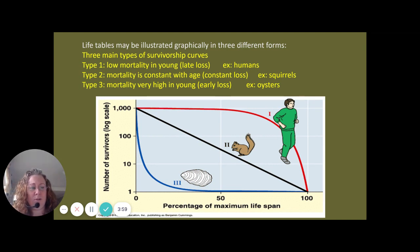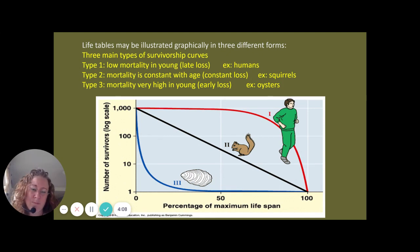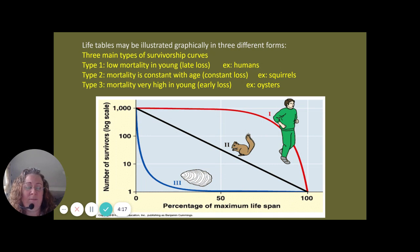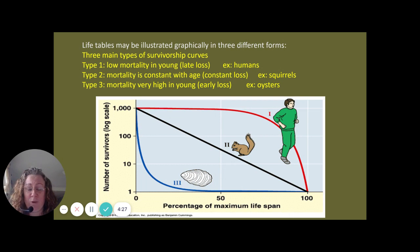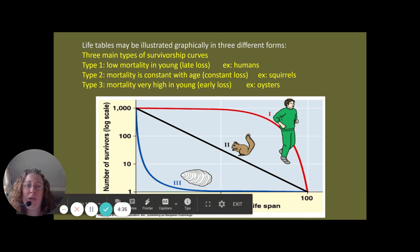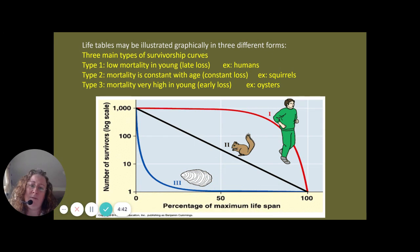The next is type 2 survivorship, where we get constant mortality — death is basically independent of age, depicted here with squirrels. The third type of survivorship is where very few individuals survive to adulthood. These organisms tend to put very little energy and resources into having young; they have a lot of offspring, but the success of those young is extremely limited.